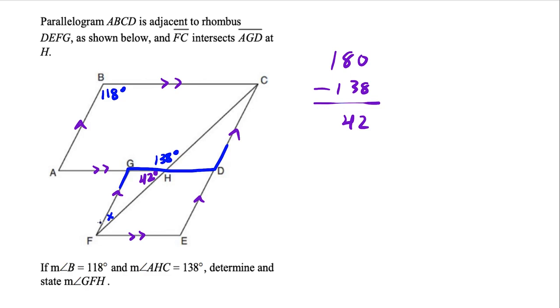But notice, opposite angles of a parallelogram are congruent. So this angle here has to be 118 degrees, which means this angle over here has to also be 118 degrees.